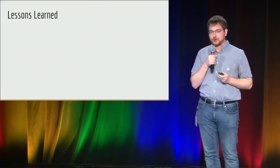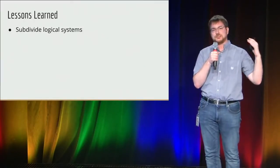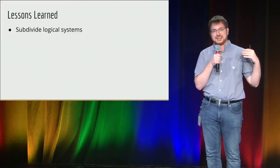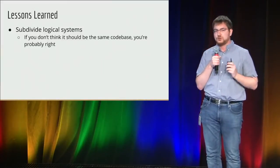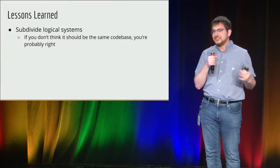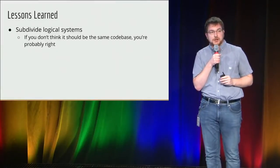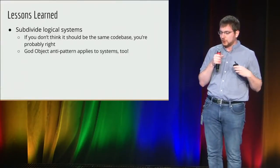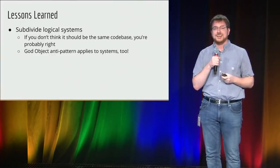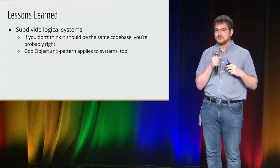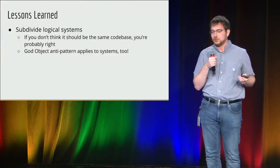So what do I wish I'd known from the get-go? Subdivide your systems. It's really easy to think you're building something on top of something else so you'll just put it in there — that gets you velocity in the short-term but causes all sorts of problems in the long-term. If you think two things should be in different code bases, you're probably right. Ideally, you want logically divided systems sharing common infrastructure — microservices, if you're thinking that. The god-object anti-pattern from object-oriented programming, where you have one object that does everything and nothing, applies to systems too. It's generally just good software engineering practice.